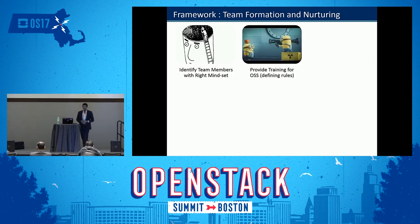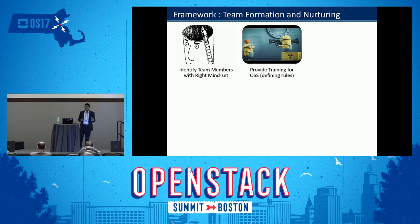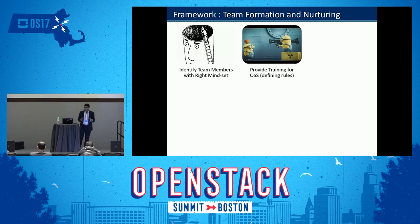Next is providing training for open source software and defining the rules. Developers in the organization have access to both closed source and open source responsibilities, so training is needed to create the organizational culture mindset — what part has to be in open source and what part cannot be. This fundamental training must be given to each developer.